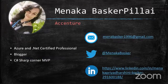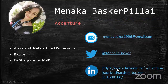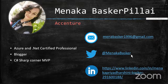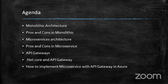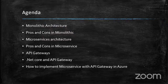So as already introduced, here's my contact information — you can reach out to me via those platforms. What we are going to discuss today: monolithic architecture, the pros and cons of monolithic and microservice architectures, API gateways, .NET Core and API Gateway, and how to implement microservice with API Gateway in Azure. If you see this agenda, you may feel like these are very basic things.